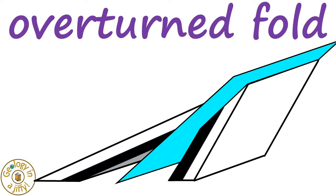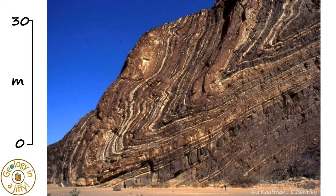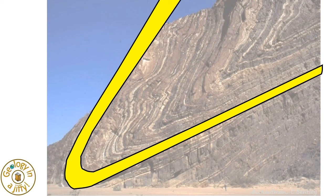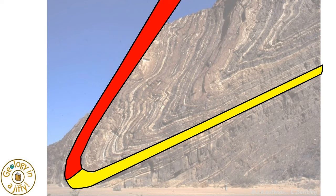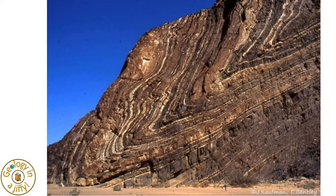An overturned fold has a highly inclined axial plane such that the strata on one limb are overturned. This cliff face in Namibia displays a syncline in late Proterozoic age strata whose left-hand limb has been overturned to the right, making the fold overturned.